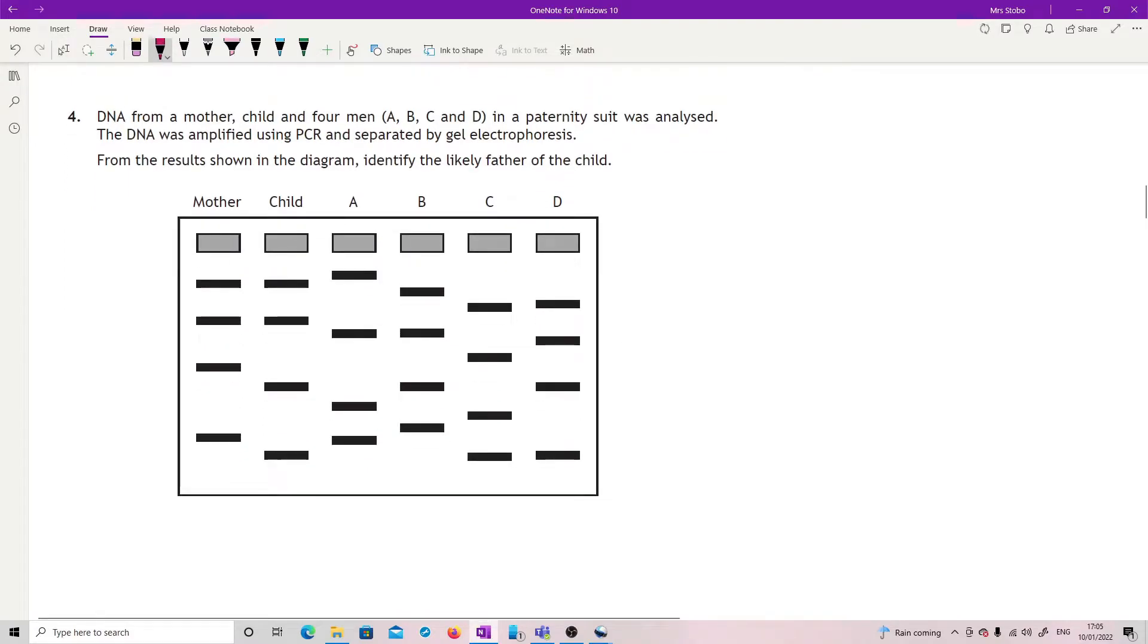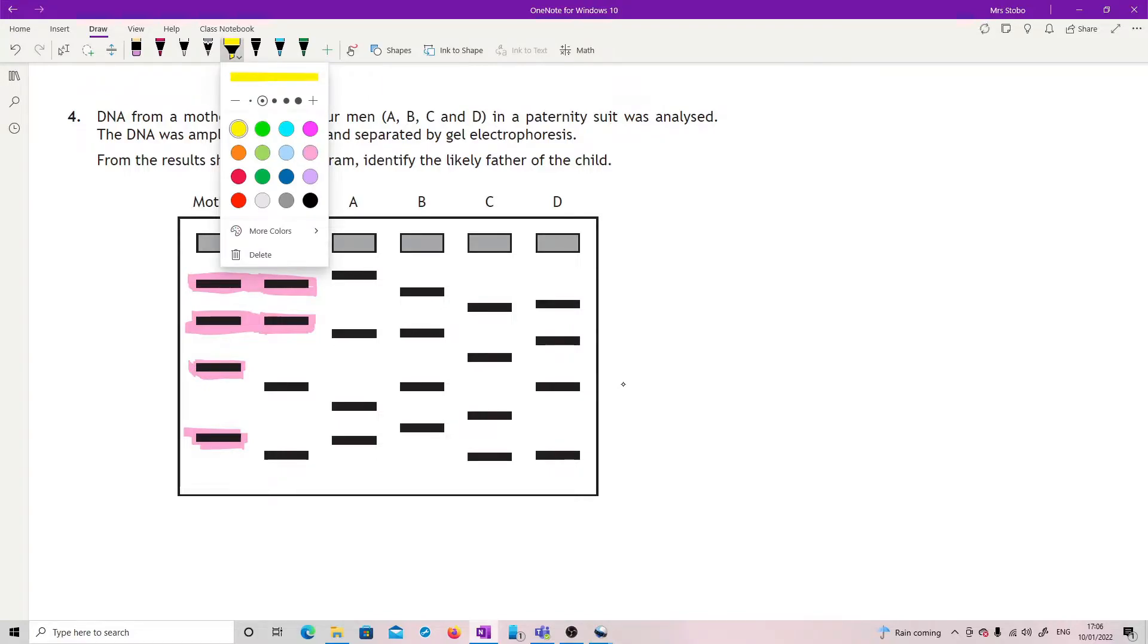Question four: DNA from a mother, child, and four men A, B, C, and D in a paternity suit was analyzed. DNA was amplified using PCR and separated by gel electrophoresis. From the results identify the likely father of the child. Here is the mother's bands. What we're going to do first is get rid of the mum as an issue with the child. This band from child must have come from mum and this band from child must have come from mum because they are matching up. So what I'm looking for is a father that can give these two band points. B is potentially in the running but then the bottom one doesn't fit, A is out, C is out.